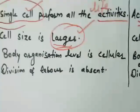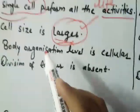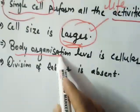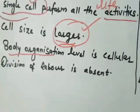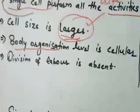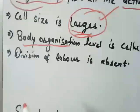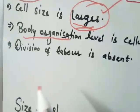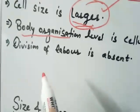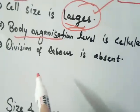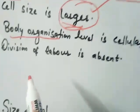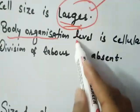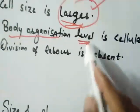Coming to the next difference, that is body organization. Body organization refers to the level at which cells are arranged — at the cellular level, tissue level, organ level, or organ system level.